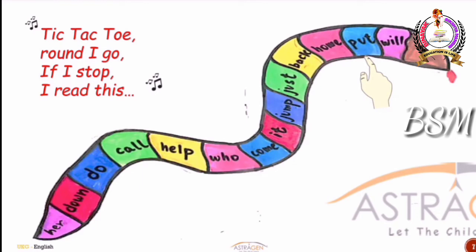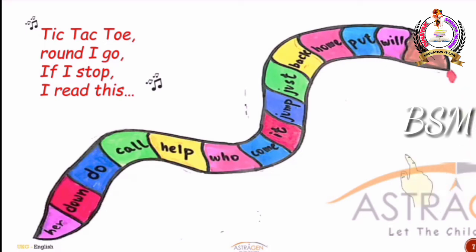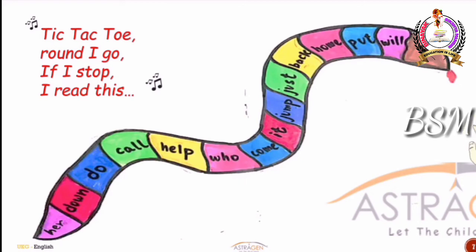Tic-Tac-Toe, round I go. If I stop, I read this. My word is 'it', so I make a sentence: It is my book. Again, Tic-Tac-Toe, round I go. If I stop, I read this — 'who'. Who is coming home today? Then the word is 'help'. Who is going to help me? It goes on like this.